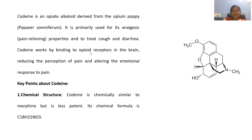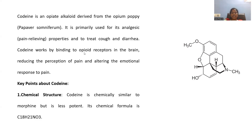Codeine works by binding to the opioid receptors in the brain, reducing the perception of pain and altering the emotional response to pain. Whenever we administer this codeine drug, it goes to the brain where the receptors inducing pain are present, and it binds to them so that the emotional sense of pain will be suppressed. This is the way codeine works as an analgesic agent.